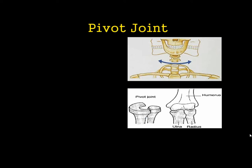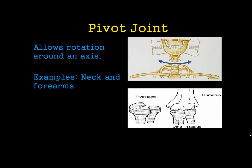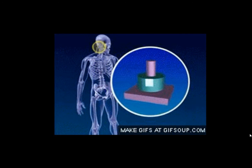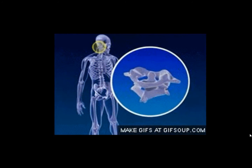Then we have a pivot joint — this is the third type. A pivot joint allows rotation on an axis. Normally what we have here is a peg shape that fits into a hole. A great example of this would be the neck, and that allows our head to just rotate around, but it doesn't allow a huge amount of other movement. You can see here one bone is the peg, one bone is the hole, and they move around each other.